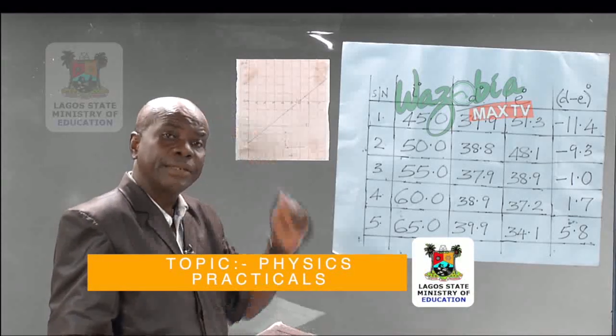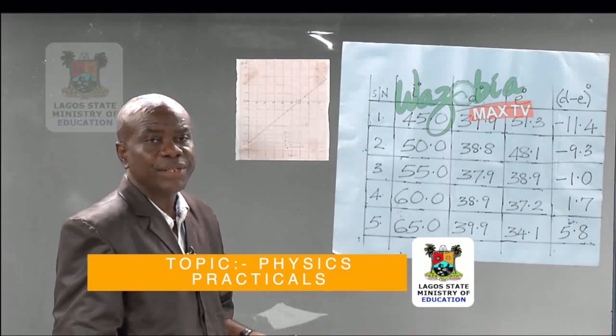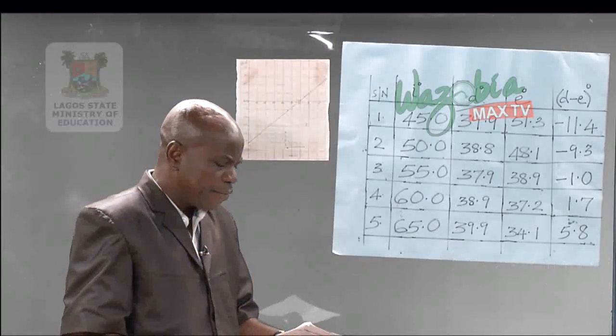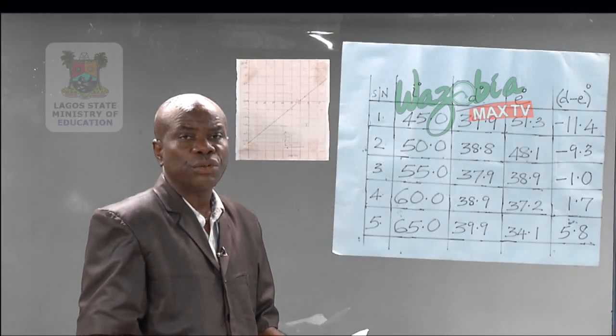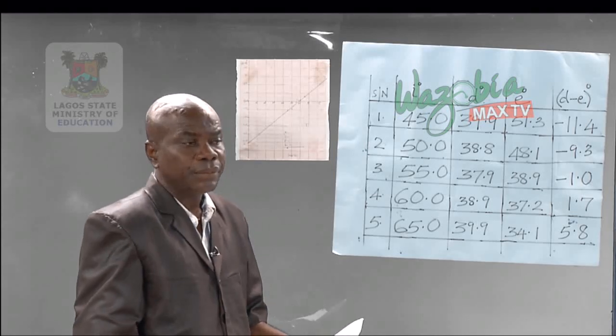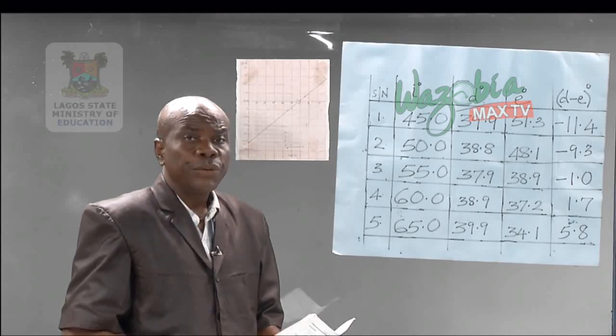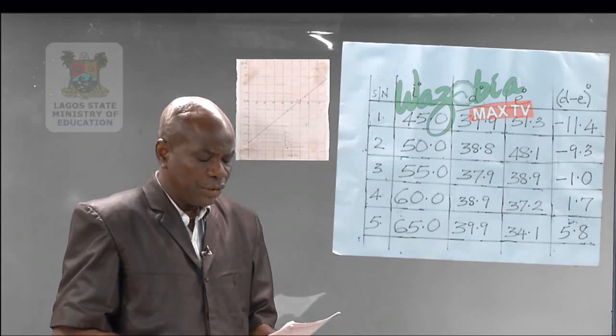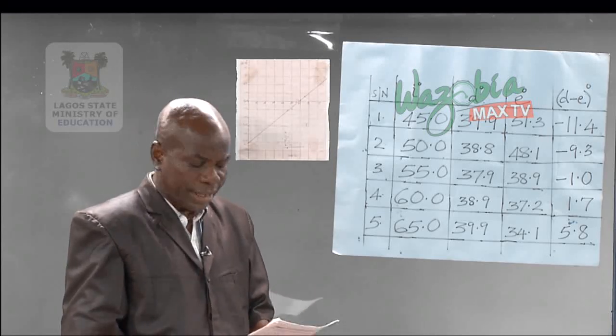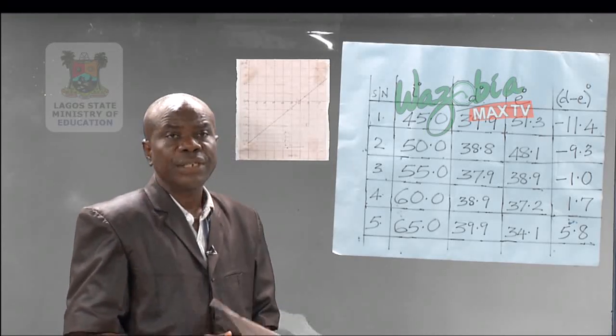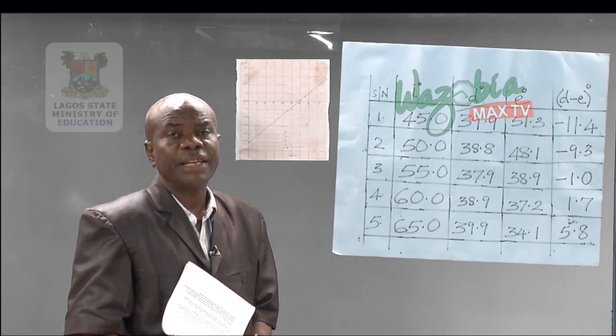In practicals, marking is based on the following subheadings: observation, which is always in tabular form; the graph; the slope; deductions; accuracy; precautions; and short answer questions. These are the areas where marking is based on.